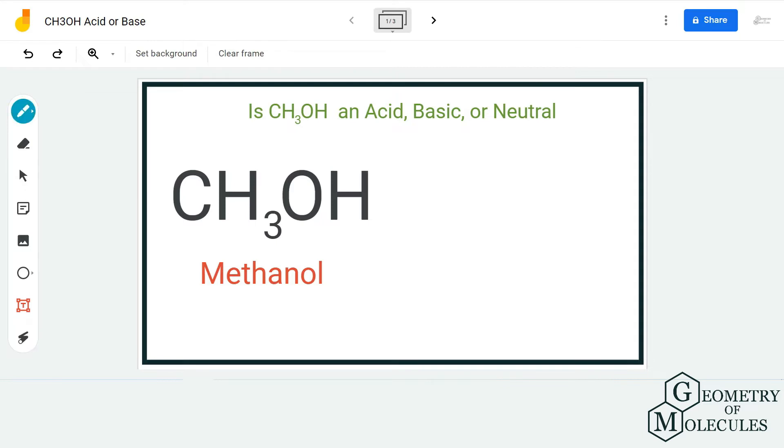Amphoteric is a term used to describe a compound that has properties of both acid and base. Methanol has the chemical formula CH3OH and it consists of one methyl group and one hydroxyl group.